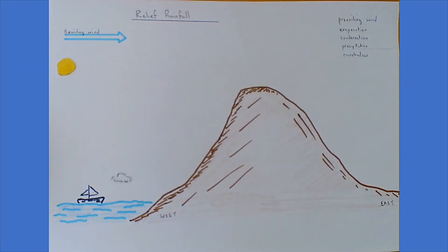One of the main causes of rainfall in the UK is due to relief rainfall caused by the air being forced to rise over upland areas as we can see on the screen. The prevailing wind generally blows from over the Atlantic Ocean towards the land.